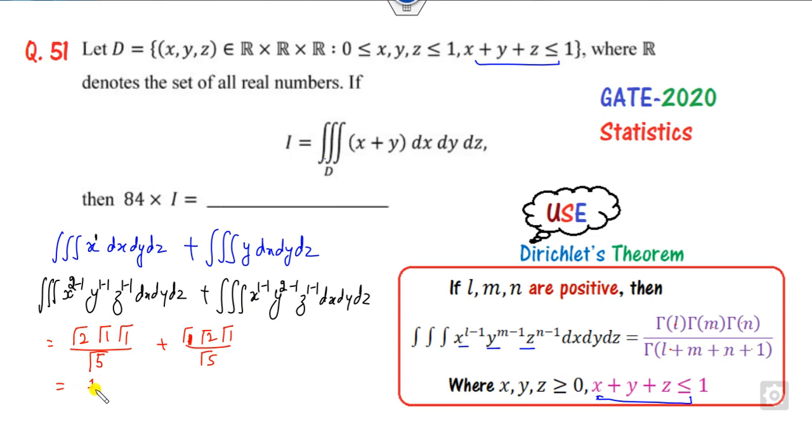What is gamma function of 2? That is 1 factorial. Gamma function of 5 is nothing but 4 factorial. This is same again.